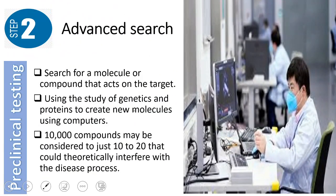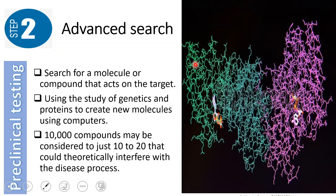After identifying the possible targets of the new treatment, an advanced search begins. Scientists search for molecules or compounds that act on this target, and computers are used alongside the study of genetics and proteins. Scientists may start from 10,000 compounds and narrow their search to 10 to 20 theoretical compounds that interfere with the disease process. Computers also help develop the specific or possible structure of the new treatment.